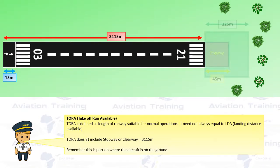TORA — Takeoff Run Available — is defined as the length of the runway suitable for normal operations. It need not always be equal to landing distance available. TORA does not include the stopway or the clearway. Remember, this is the portion where the aircraft is on the ground.